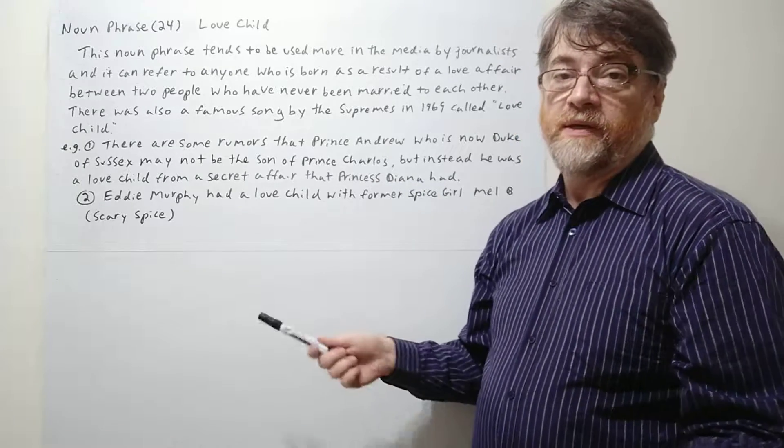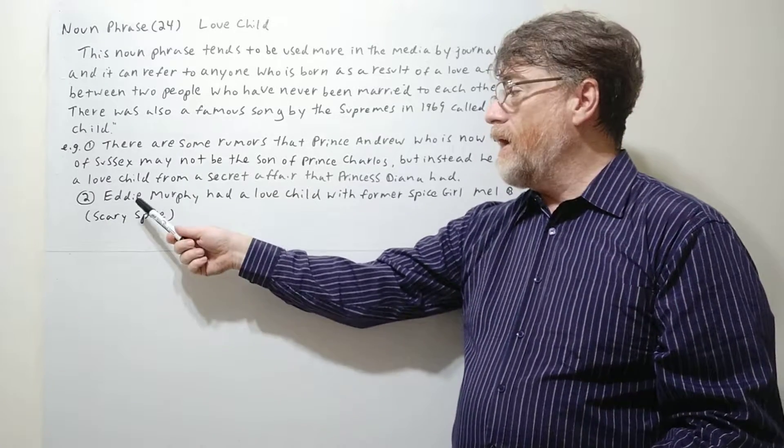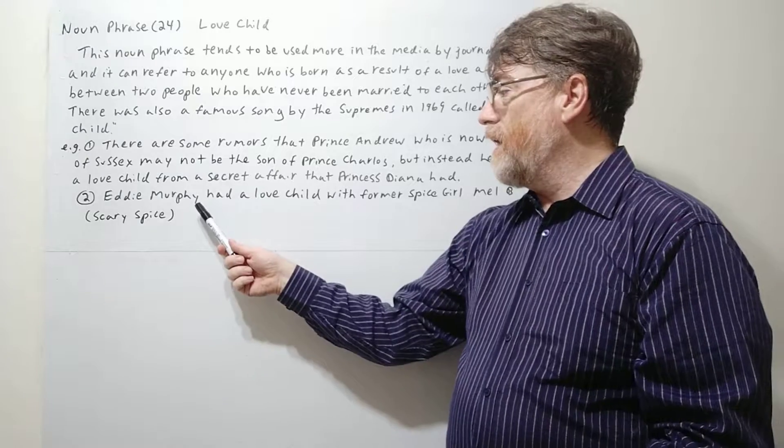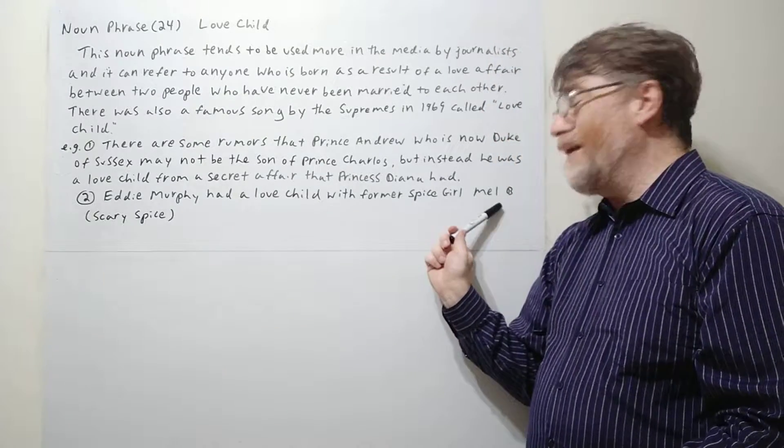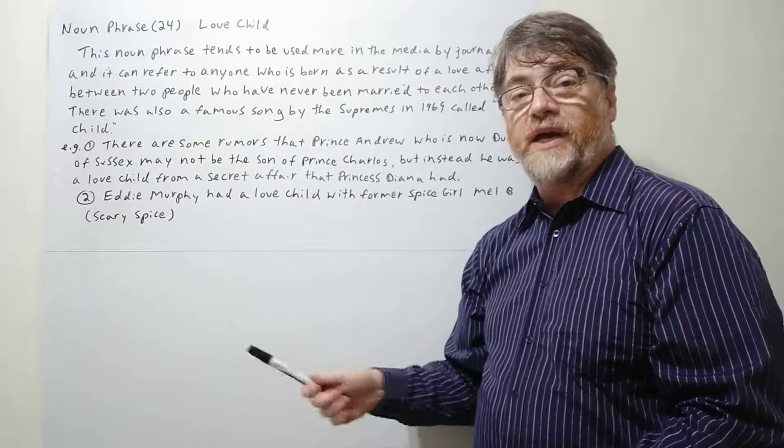Well there's rumors, so some people say that. Let's look at number two. Eddie Murphy, the funny comedian, had a love child with former Spice Girl Mel B. Sometimes she's also referred to as Scary Spice.